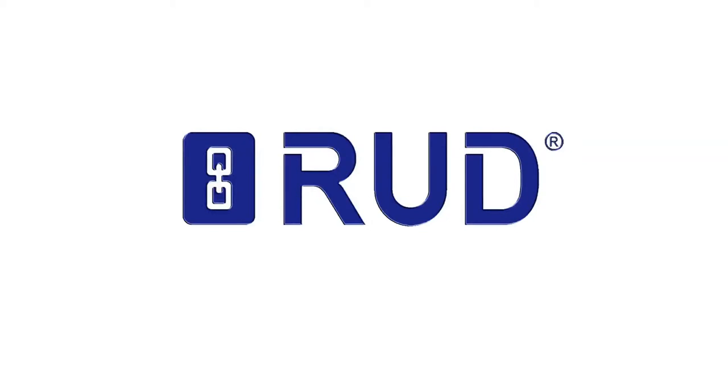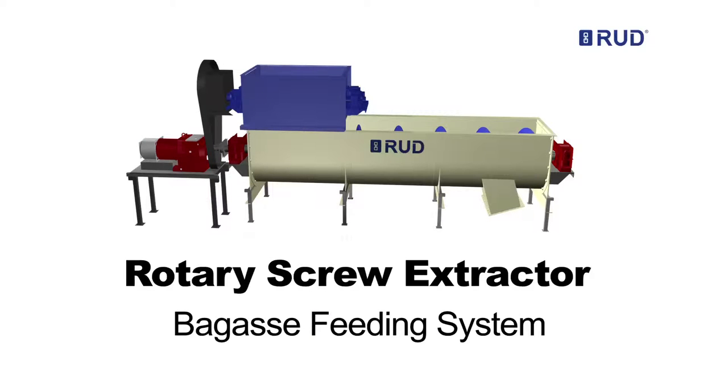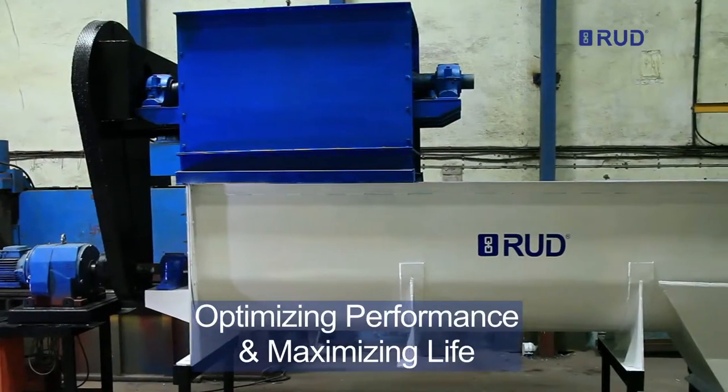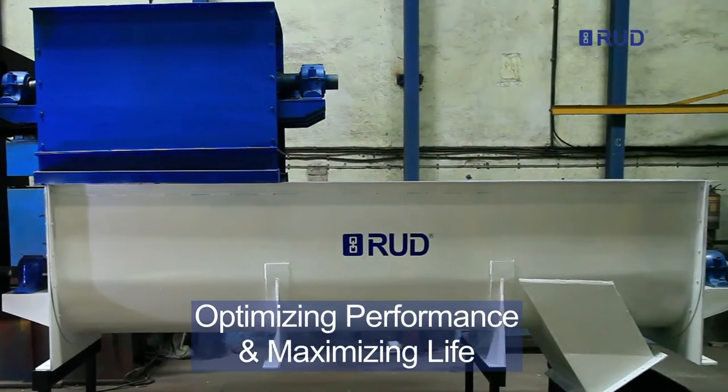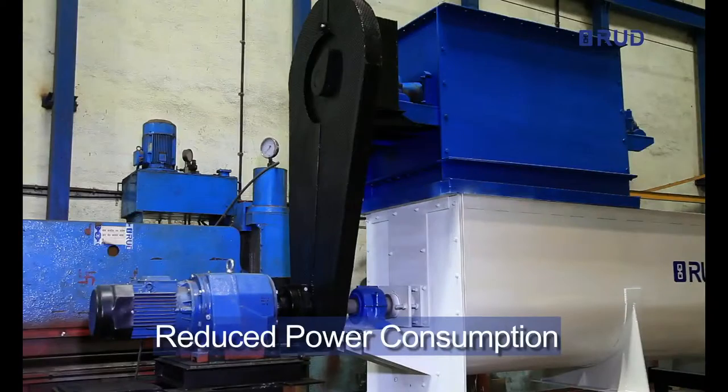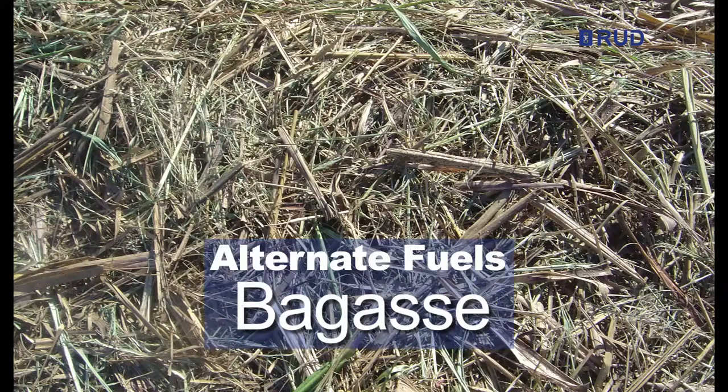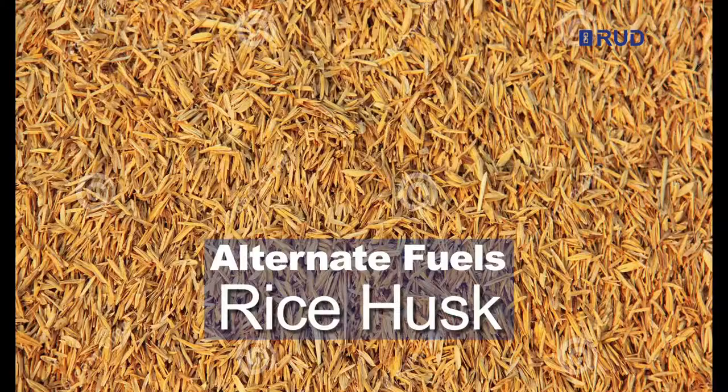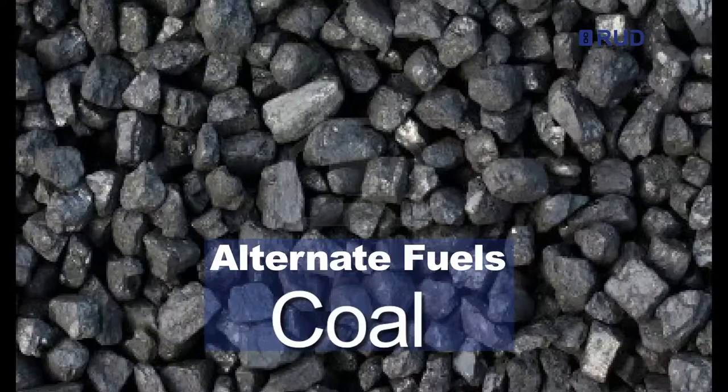Rod India presents rotary screw extractor bagasse feeding system for optimizing performance and maximizing life of boiler system with reduced power consumption. Besides bagasse, alternate fuels like rice husk and coal can also be used.